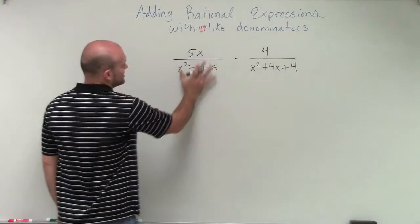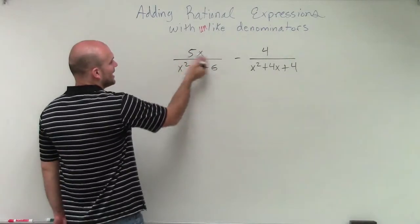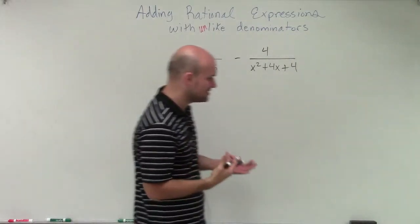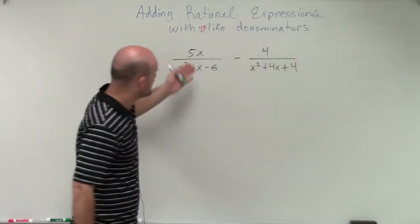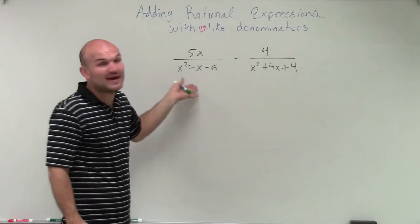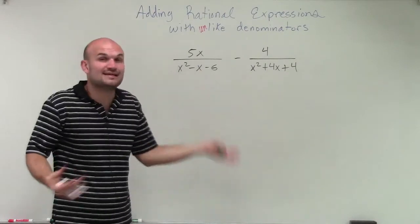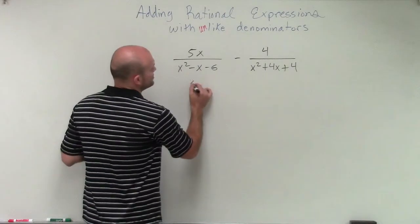So we notice, if I was going to simplify this expression, I see that I have a 5x, but I can't really simplify this any further. However, I look at my denominator and say, that is something I can simplify. That's a trinomial. Is it possible for me to factor that? So let's go and take a look.